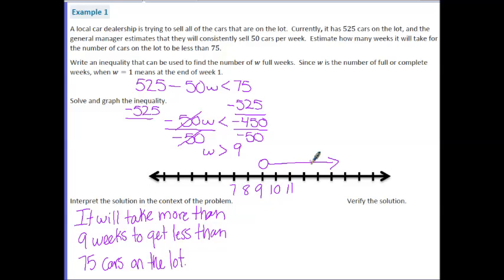So let's just verify our solution by plugging it into the original problem. If I plugged in w equals 9, which should not be part of our solution, this should not work. So let's plug this in. 525 minus 50 times 9 needs to be less than 75. Well, we have 525 minus 50 times 9, which is 450. When I subtract those, I get 75. That's false, which is what we expected.